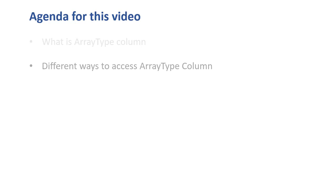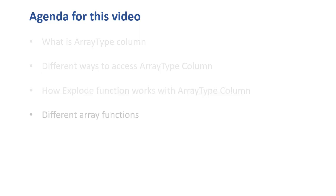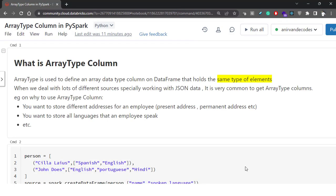First we will understand what is this array type column. Then we will see what are the different ways to access array type column. Then we will see how the explode function works on top of this array type column. And we will see what are the different inbuilt array functions that Spark provides, because these are very handy APIs that you can use to manipulate the array type column. We will be running all these commands in Databricks Community Edition.